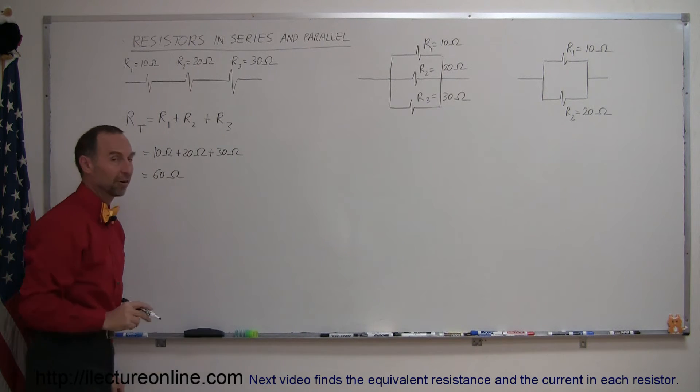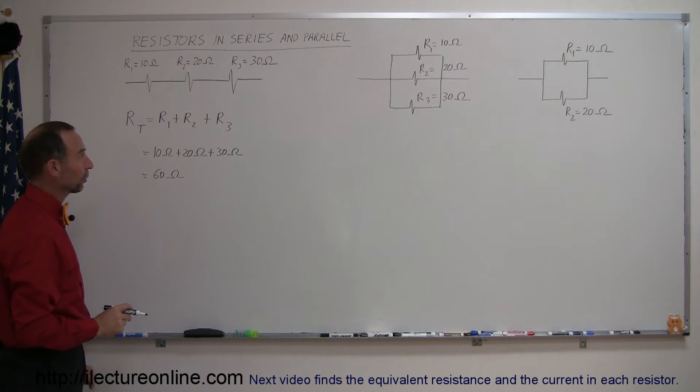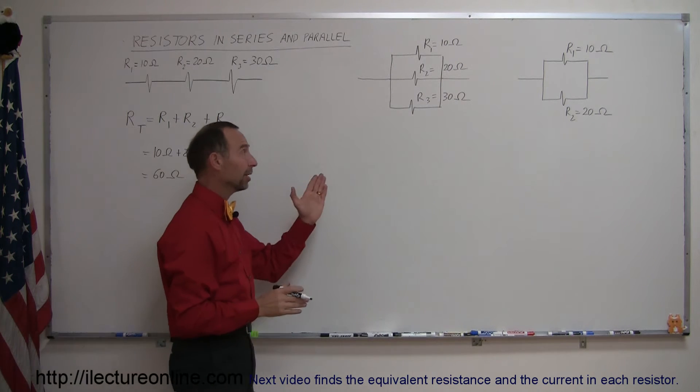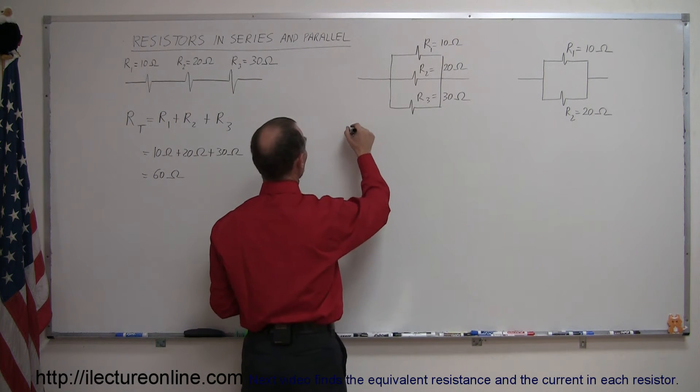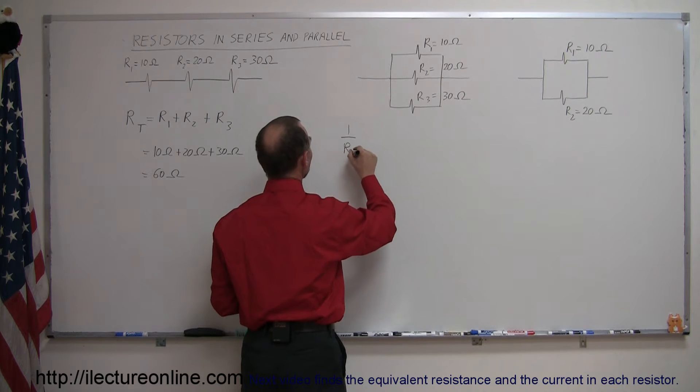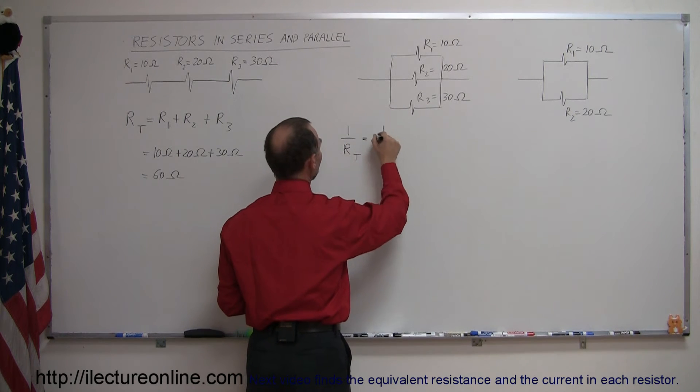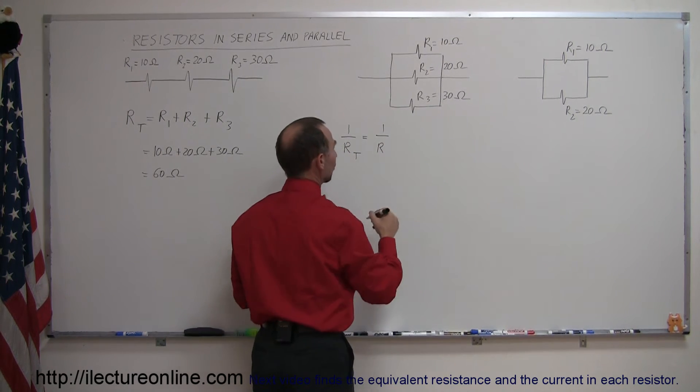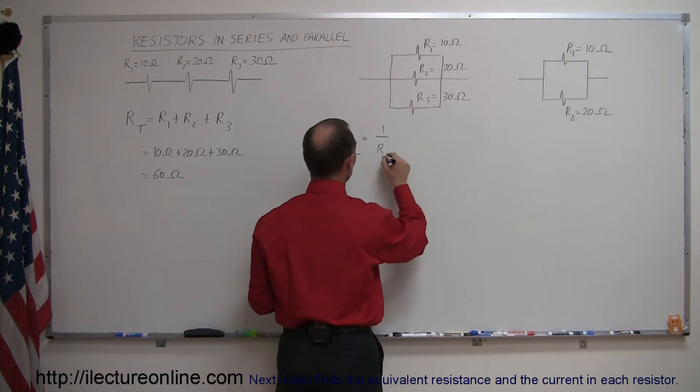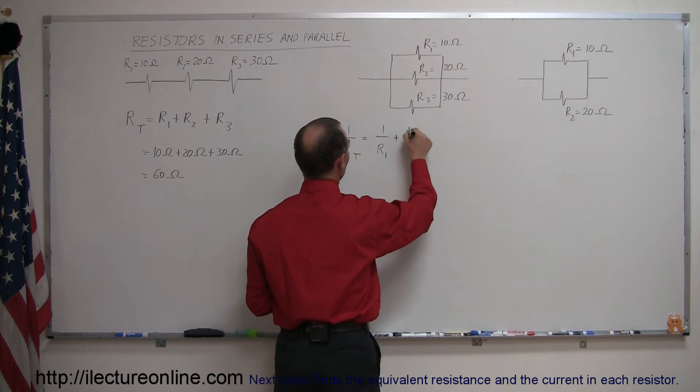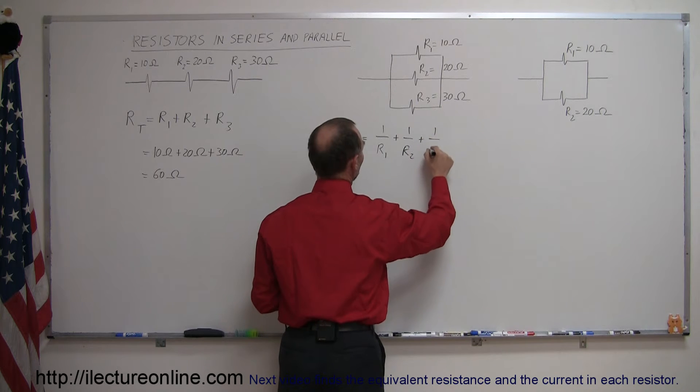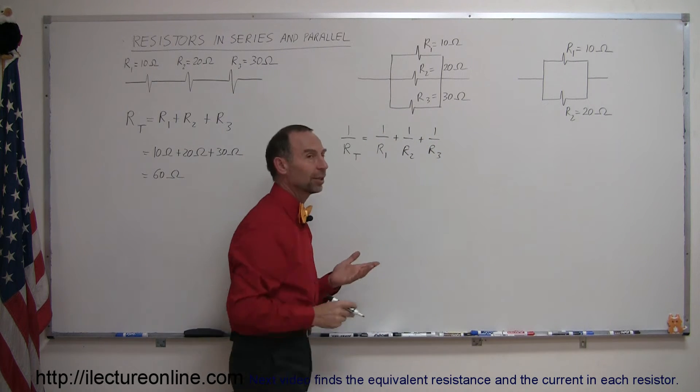When they're in parallel however, it's a little bit different. To find the total resistance there, you have to take the inverse of total resistance equal to the inverse of the sum, or the sum of the inverses of the three resistors. So that's 1 over R1 plus 1 over R2 plus 1 over R3. So it's a little different here.